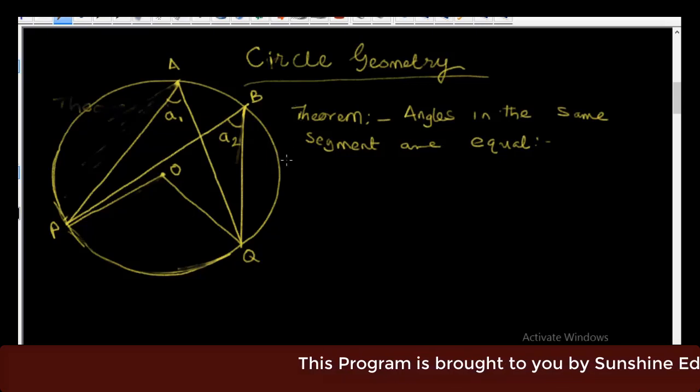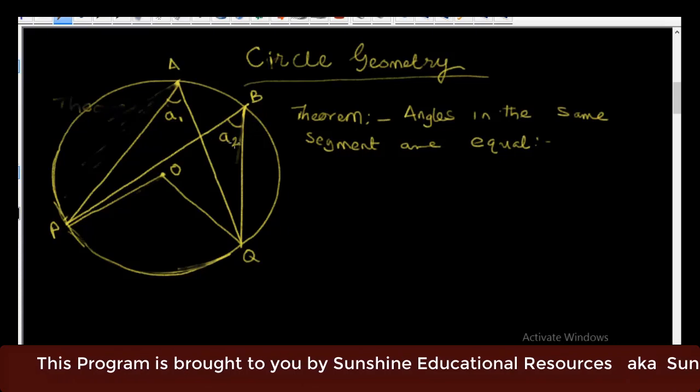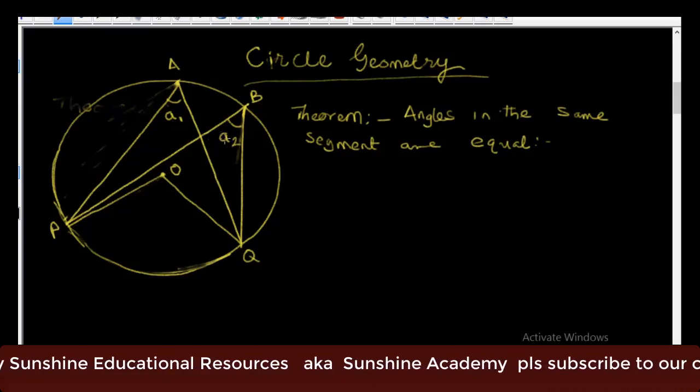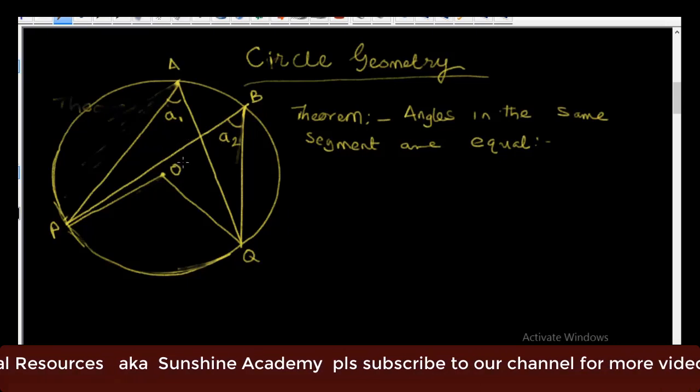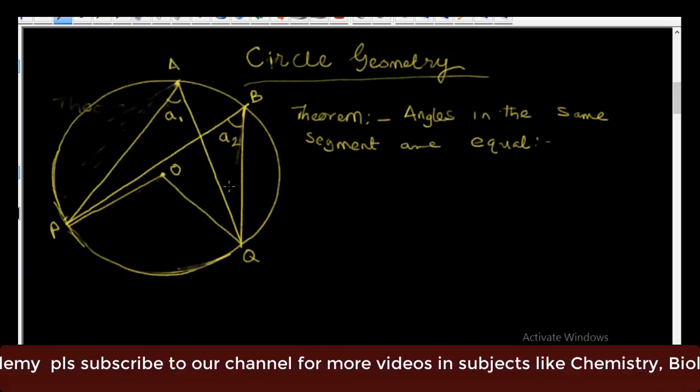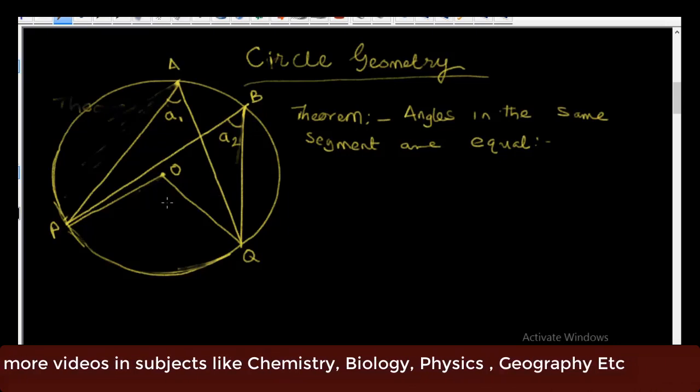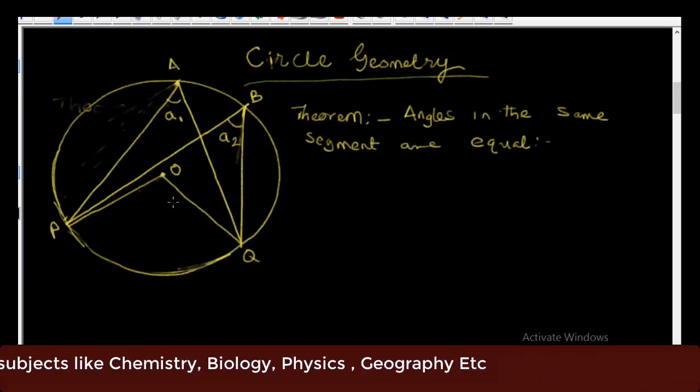Now we want to prove that angle A1 and A2 are equal. In the previous lesson we proved that the angle subtended at the center of the circle is twice that subtended at any point on the circumference. So today we're going to prove that angle A1 and A2 are equal.